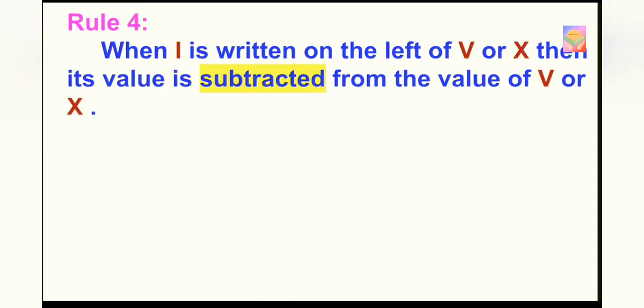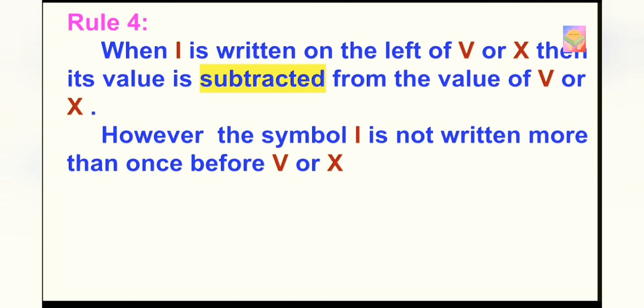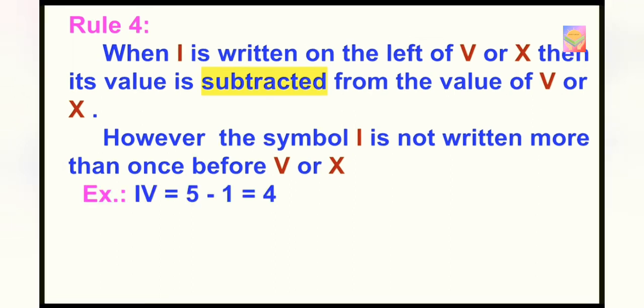Now let's move to last rule. When I is written on the left of V or X, then its value is subtracted from the value of V or X. However, the symbol I is not written more than once before V or X. Now let's see with an example. If you write I on the left of V, then its value is subtracted from the value of V, i.e. 5 minus 1 is equal to 4. Similarly, IX is equal to 10 minus 1 is equal to 9.